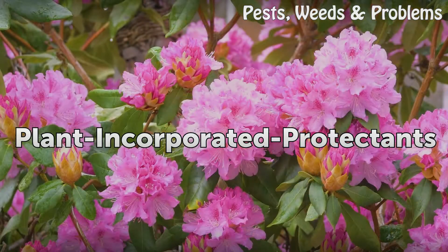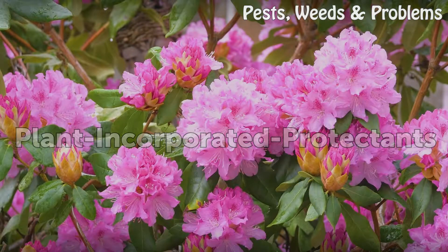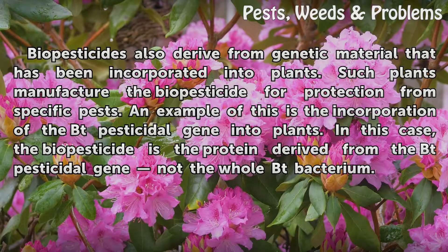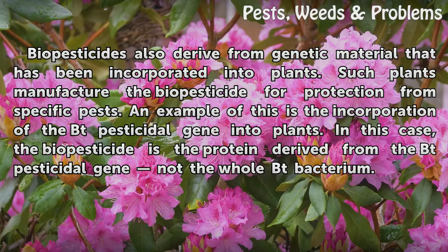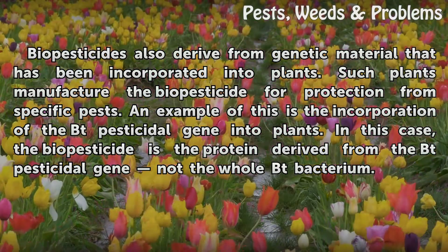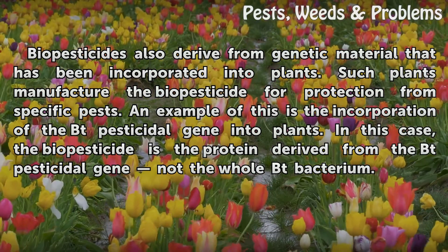Plant Incorporated Protectants. Biopesticides also derive from genetic material that has been incorporated into plants. Such plants manufacture the biopesticide for protection from specific pests. An example of this is the incorporation of the Bt pesticidal gene into plants. In this case, the biopesticide is the protein derived from the Bt pesticidal gene, not the whole Bt bacterium.